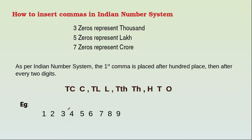Now we will see one example. The given number is 1, 2, 3, 4, 5, 6, 7, 8, 9. We want to place the commas in the Indian number system. The first comma is placed after the hundreds place — ones, tens, hundred — then a comma, then every two digits: thousand, ten thousand, comma, lakh, ten lakh, comma, crore, ten crores.